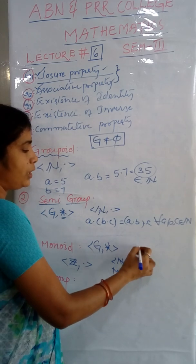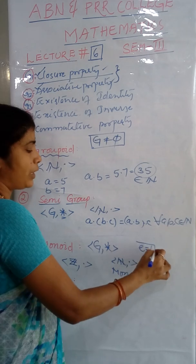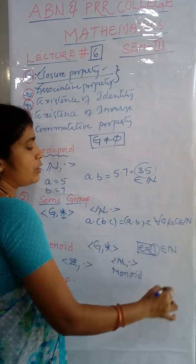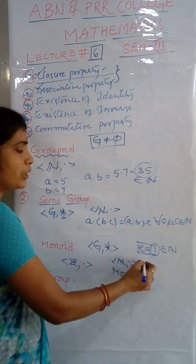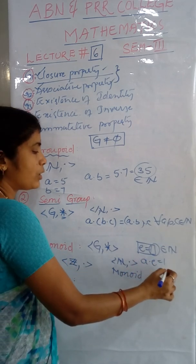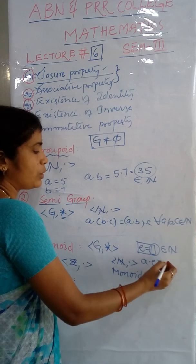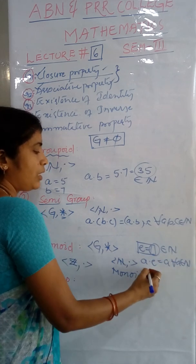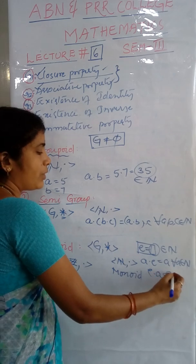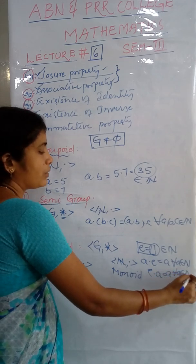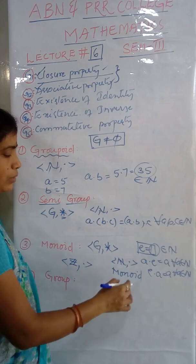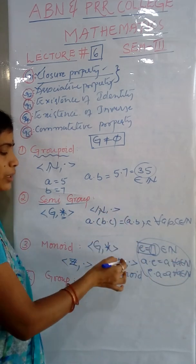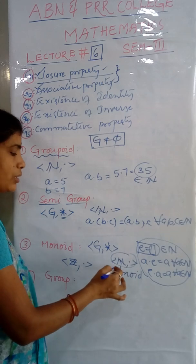Because here we can say that multiplicative identity is always one. One is in the set of naturals. That's why we are calling that A dot E equals A for all A in N. Similarly, E dot A equals A for every A in the set. So existence of identity exists. N, dot is a monoid. It is a particular example for monoid.